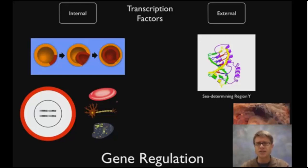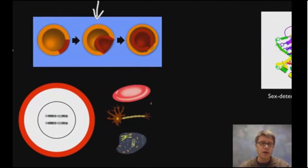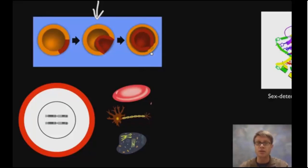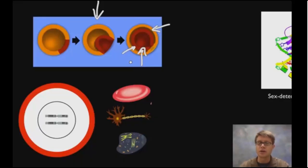So how does a cell decide what cell it's eventually going to become? Well, like I said, they're cued internally. This would be that first blastula. As the blastula starts to fold, it eventually folds in on itself and forms something called a gastrula. If you're a cell on the outside, you form what's called the ectoderm; if you're on the inside, you're the endoderm; and if you're in between, you form a germ cell layer called the mesoderm. The mesoderm, for example, will form all the bones and muscle inside you.